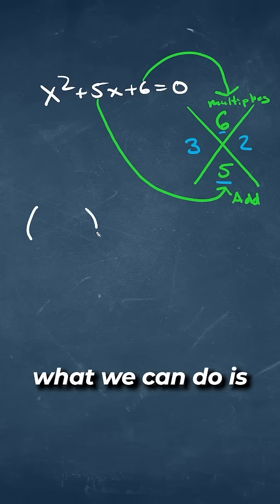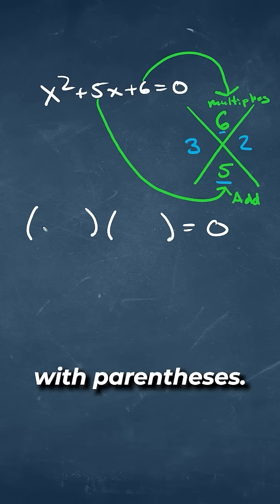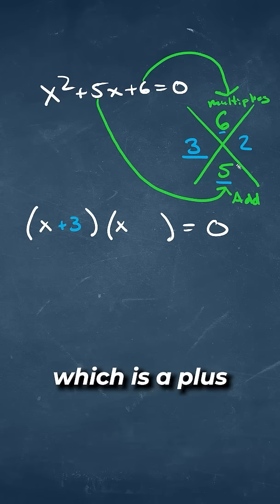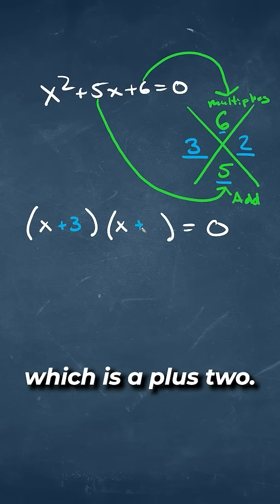When we have that, what we can do is put this in a form of parentheses. We'll put x on the left side, and then we'll take the 3, which is a plus 3, and a 2, which is a plus 2.